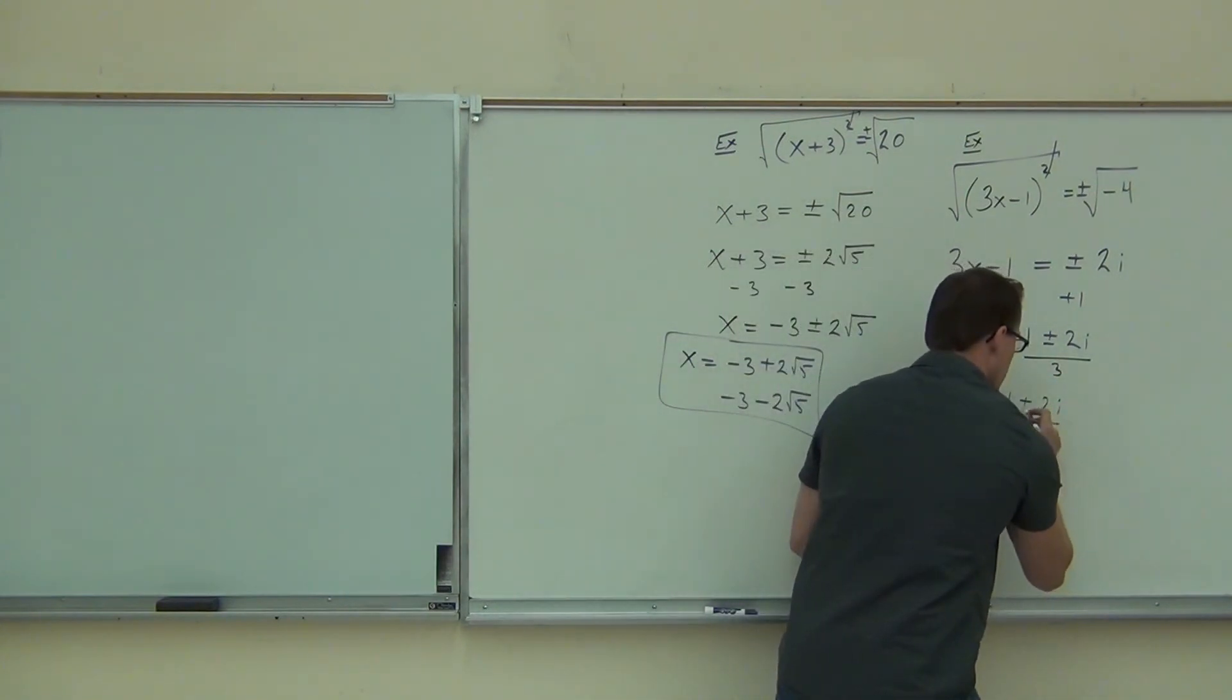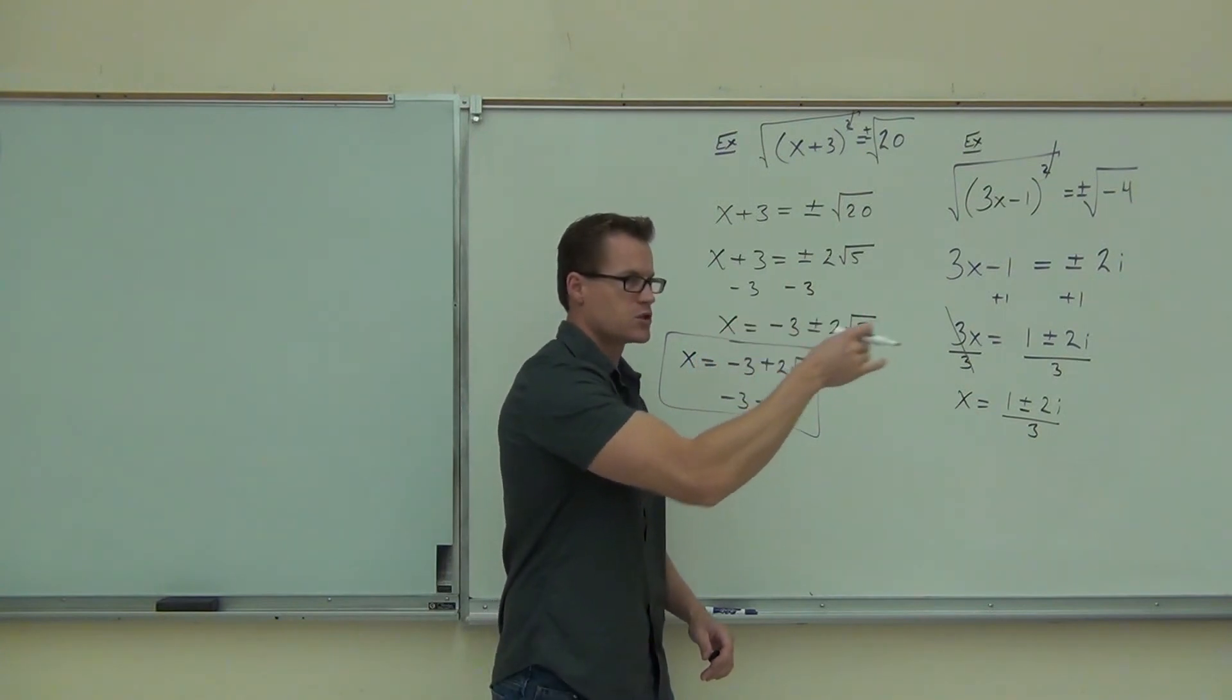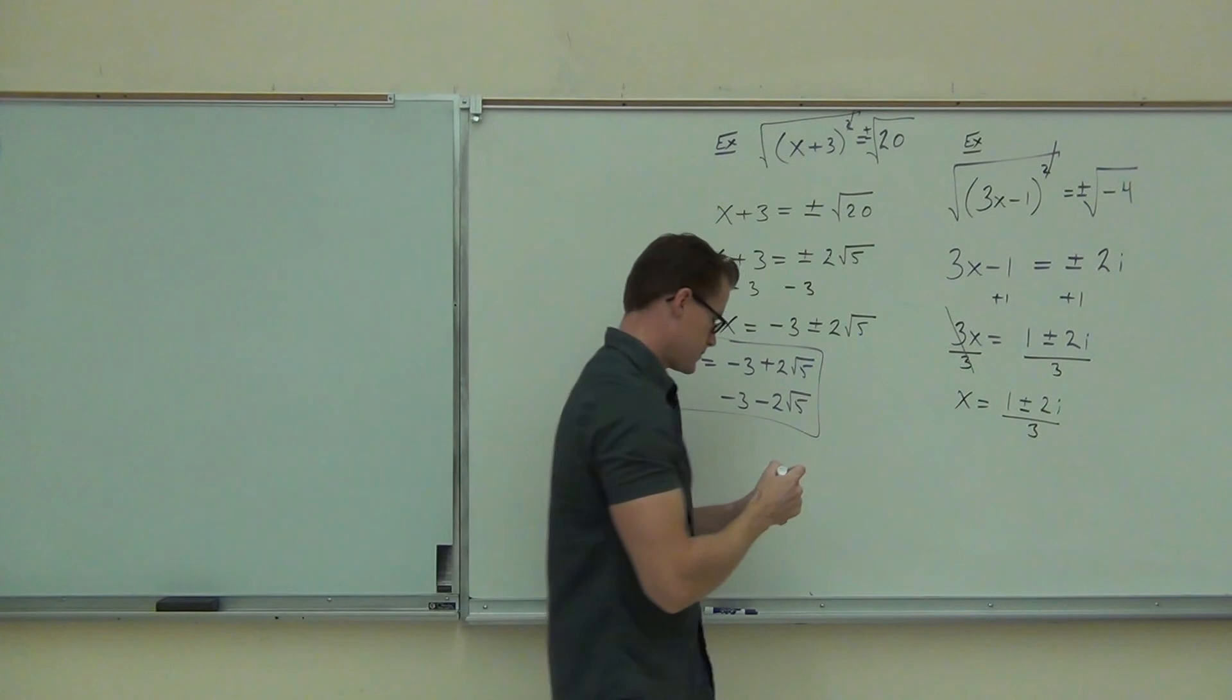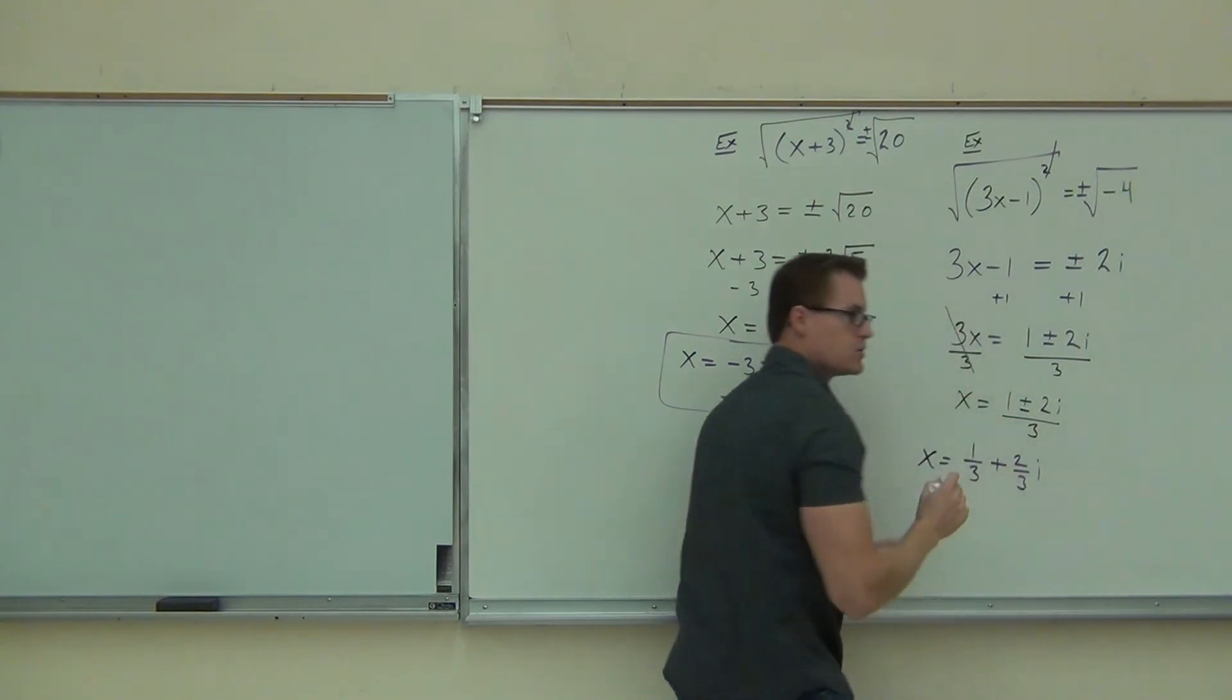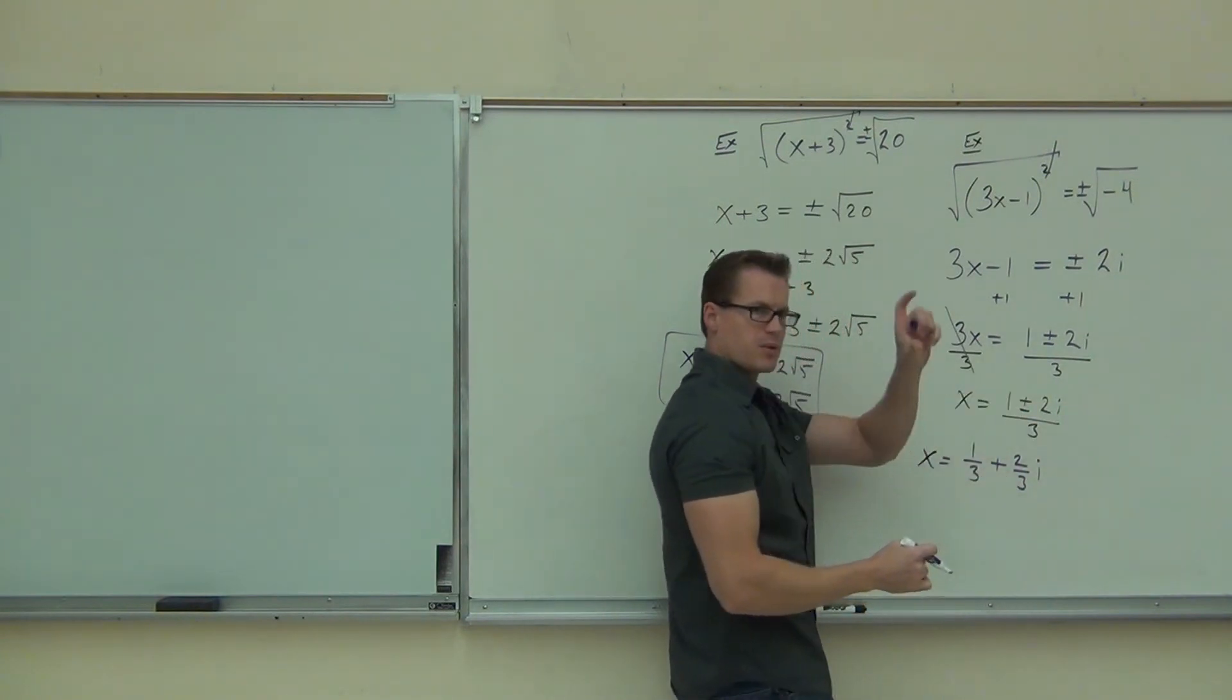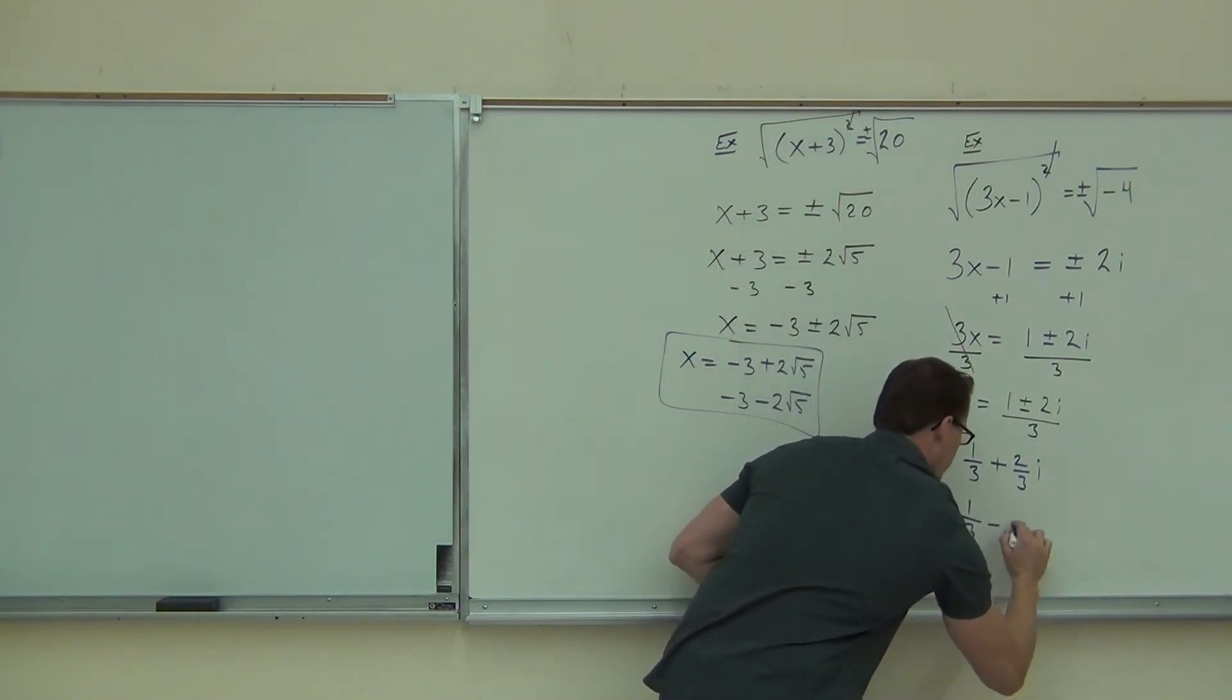Now, we don't just have one of those. We've got two of them. You're going to have 1 third plus 2 thirds i. You're going to have 1 third minus 2 thirds i. I'm doing two things here. Not only am I splitting up my fraction, 1 third, 2 third, I'm also going to be splitting up my plus-minus. 1 third plus 2 thirds i. 1 third minus 2 thirds i.